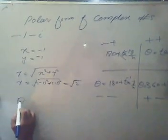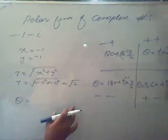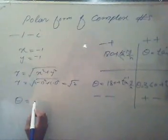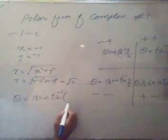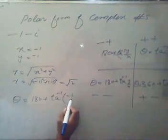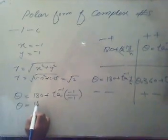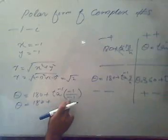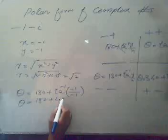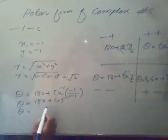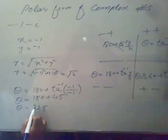Now, theta will be different because we will have to take care about the coordinate in which it lies. Theta will be 180 plus tangent inverse of y by x. So y is now minus 1 and x is minus 1. So we will have the value of 180 plus tangent inverse of 1. If you use the calculator or table to find out the value, it would be 45. So the theta will be 225.